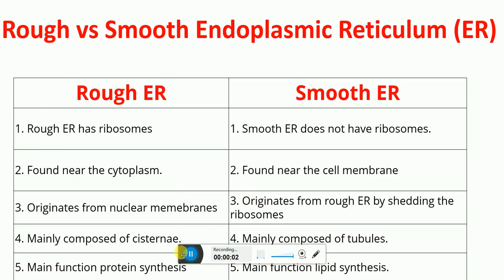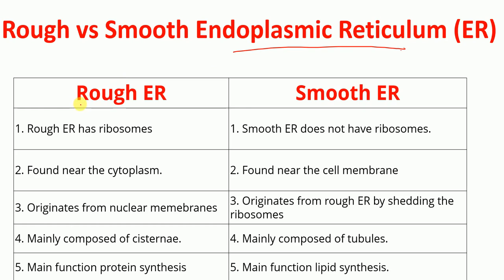In this video, we'll talk about the differences between rough and smooth endoplasmic reticulum. First, rough endoplasmic reticulum, or RER, has ribosomes. A helpful memory trick: R for rough and R for ribosome. In contrast, smooth endoplasmic reticulum does not have ribosomes.